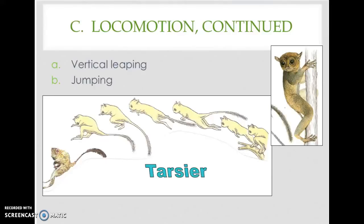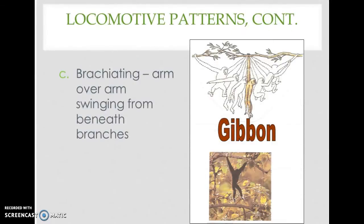Although all non-human primates are quadrupeds, there's great variation in how they use their limbs. Some specialized forms include vertical leaping and clinging, seen in small-bodied primates like the tarsier, which has very elongated hind limbs for a powerful springing action. Another specialized form is brachiation — arm-over-arm swinging suspended from branches — exhibited by the gibbon, which has very long arms, extremely flexible wrist joints, and shortened legs.